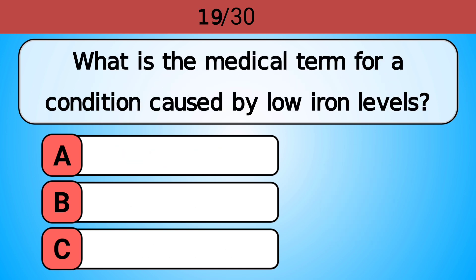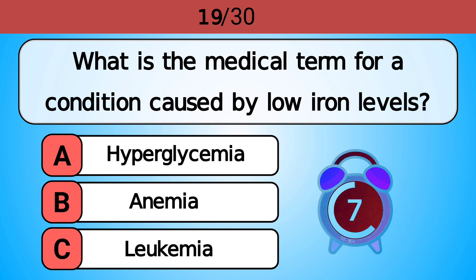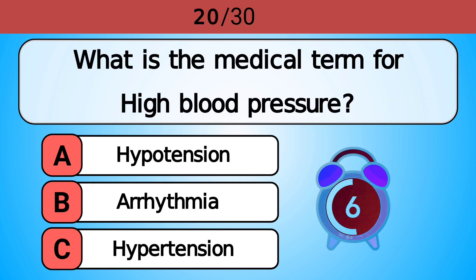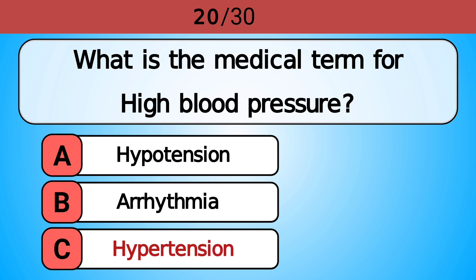What is the medical term for a condition caused by low iron levels? Answer B, anemia. What is the medical term for high blood pressure? Answer C, hypertension.